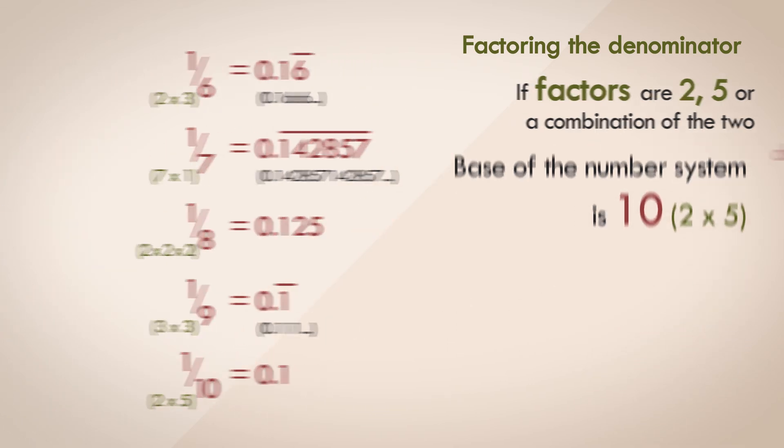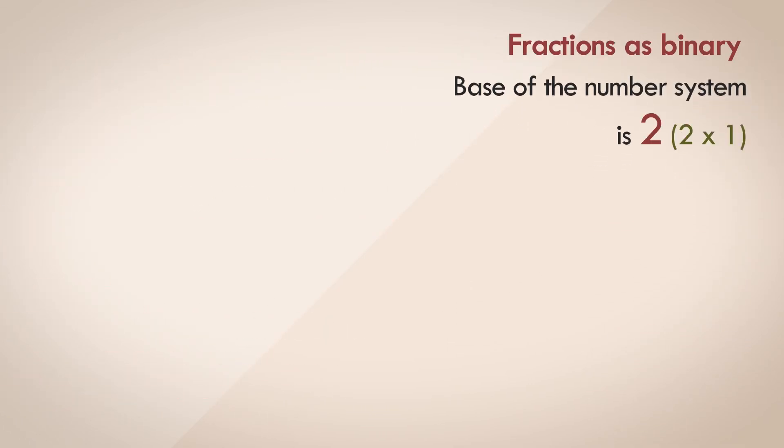What about the binary number system? The restrictions are far worse here. Since the base of the number system is 2, only denominators with factors of 2 can be exactly represented in binary notation.